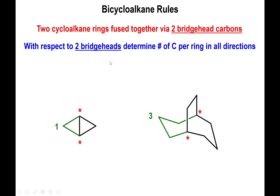In these two structures you can see that the first molecule has one carbon to the left and three carbons to the left in the second. Looking at the right portion, the first molecule has one carbon to the right, and the second has three carbons to the right. Finally, the more complex structure on the right side has two additional carbons that connect to the bridge heads.